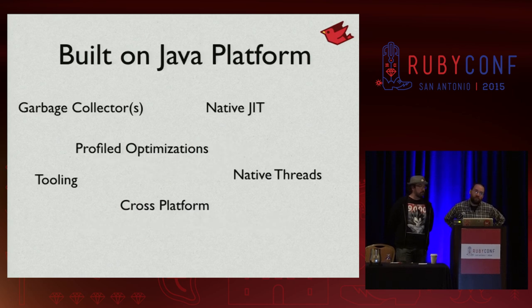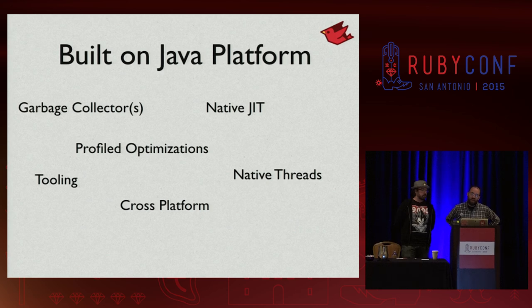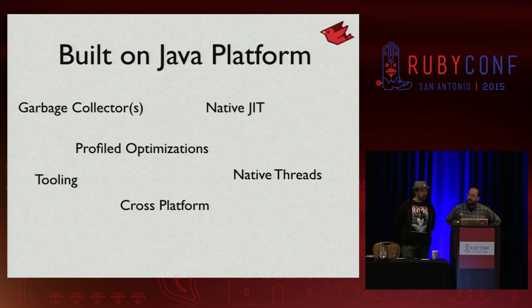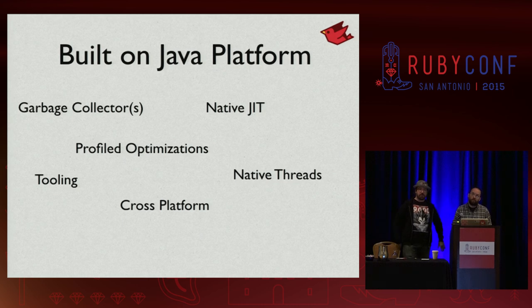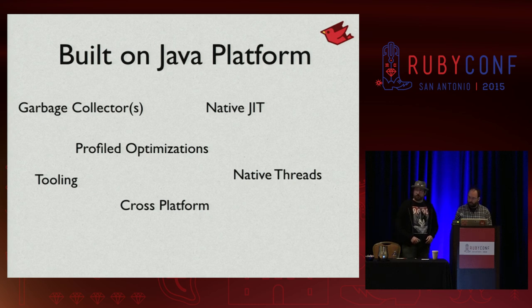We try to be as compatible as we can with CRuby, and we support these three versions. JRuby is built on top of the Java platform, so we get all the benefits Java has — we don't have to write our own garbage collectors, Hotspot makes our code run very quickly. Most importantly, Java has native threads, and so does JRuby, so there's no global interpreter lock. There are good talks later today: Jerry Antonio on how the GIL isn't your savior at 1:15, and Peter Jalupa on concurrent Ruby library at 4:20 in this room.